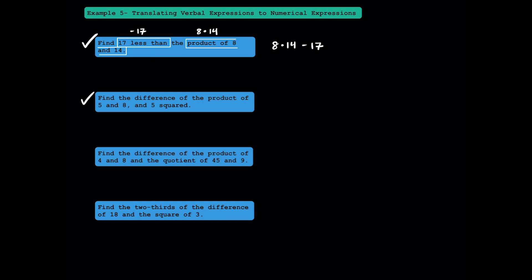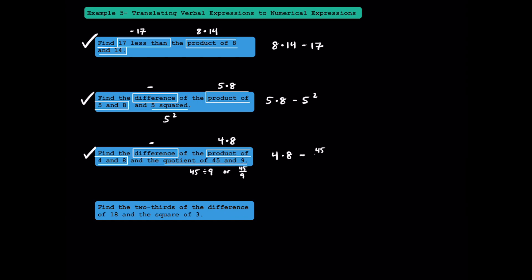Next: find the difference of the product of 5 and 8, and 5 squared. Difference means subtraction. The product of 5 and 8 is 5 times 8, and 5 squared is written with an exponent. So the expression is 5 times 8 minus 5 squared. Then: find the difference of the product of 4 and 8, and the quotient of 45 and 9. Product of 4 and 8 is 4 times 8; quotient means division, so 45 divided by 9 can also be written as 45 over 9. The expression is 4 times 8 minus 45 over 9.